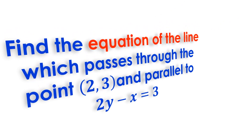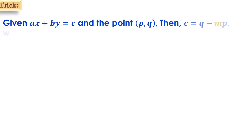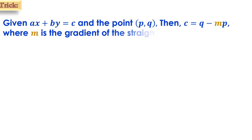Find the equation of the line which passes through the point (2, 3) and parallel to 2y minus x equals 3. Now the trick. Given ax plus by equals c and the point (p, q), then c equals q minus mp, where m is the gradient of the straight line.